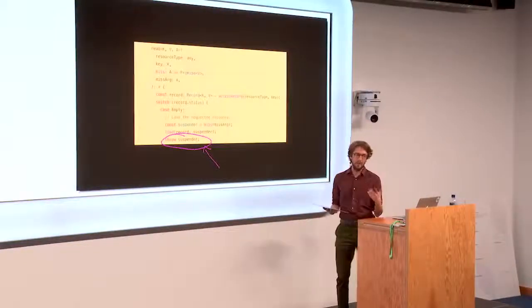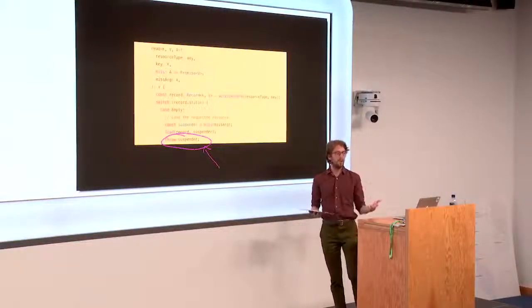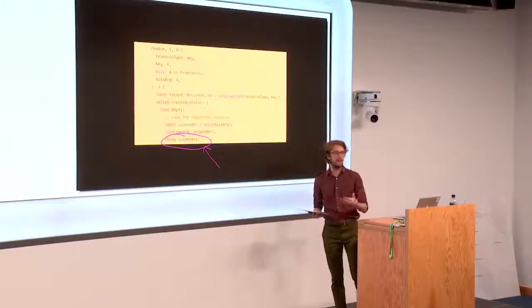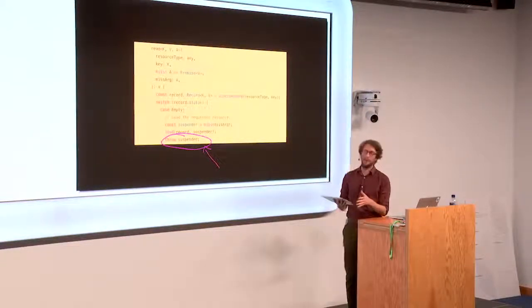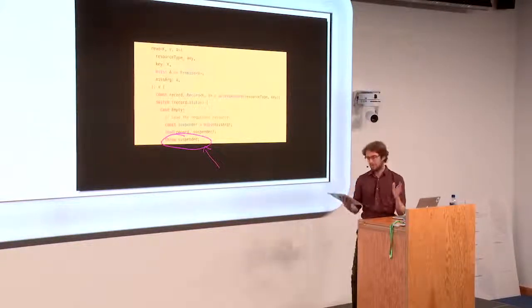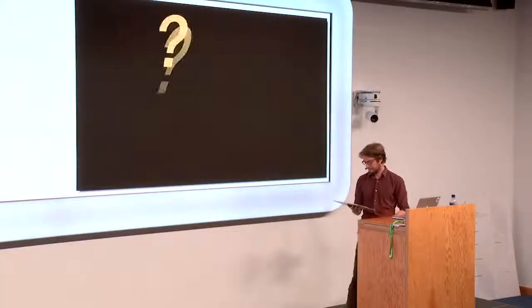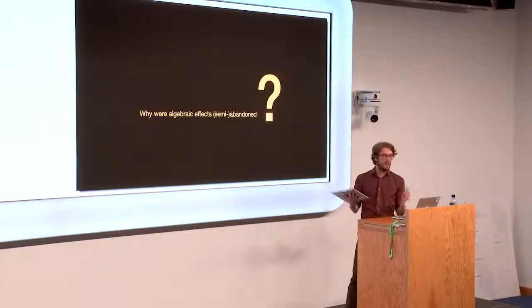Well, sadly, this too went, but for one crucial exception, which was React suspense. So React suspense uses this kind of mechanism. It throws a promise. That is then handled. And when it resolves, the computation resumes. But we don't have any kind of generic algebraic effects in React yet. Why were they semi-abandoned? Why don't we have them?